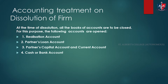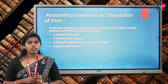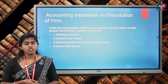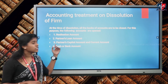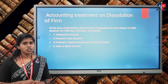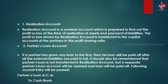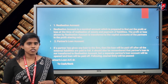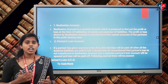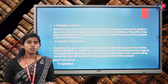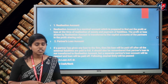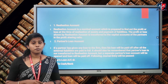Finally, we look at the accounts to be maintained under dissolution of a partnership firm. Mainly four accounts are maintained. The first and most important is the realization account — a nominal account prepared to find out the realization profit or loss. All assets and liabilities are transferred to this account; every asset should be realized and every liability paid up. The realization profit or loss is then shared among the partners in their profit sharing ratio.